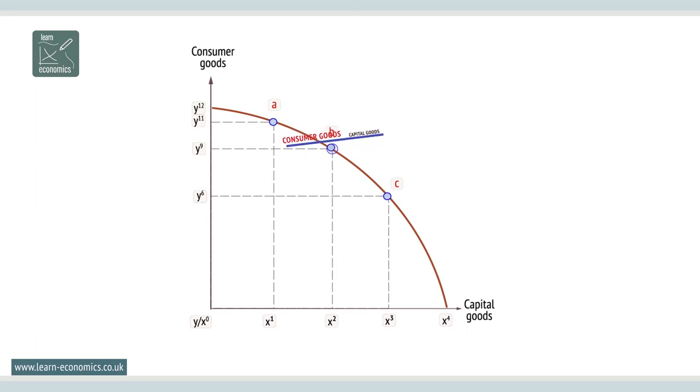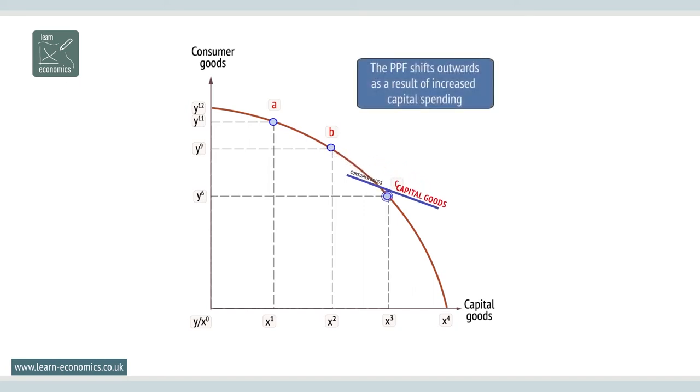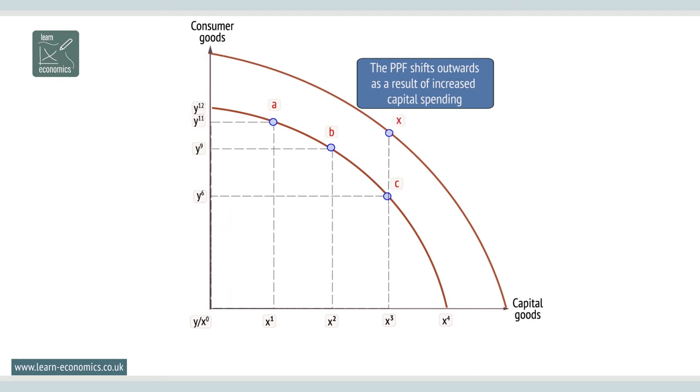However, point C may be preferable in that, with more capital goods, the economy can grow and produce more consumer goods at point X. The PPF shifts outwards as a result of increased capital spending.